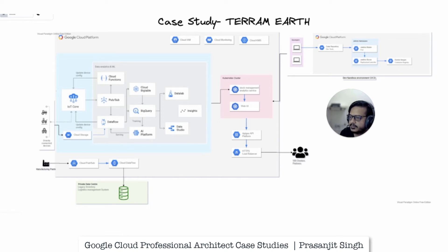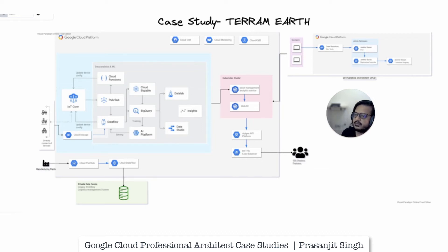We can leverage their applications into a microservices architecture and deploy them as containers using Google Kubernetes Engine. A sandbox environment can be provided to developers with App Engine or various other GCP products. We can make it more secure by using Cloud KMS for managing and rotating their cryptographic keys. We can use a developer portal for partners and developers to search and test the TerramEarth APIs, and we can use Cloud Operations for logging, tracing, profiler, monitoring, and debugging.